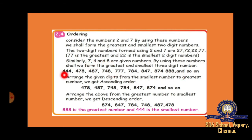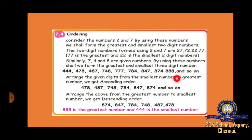For example, with digits 7, 4, and 8, you combine them to form all possible three digit numbers — such as 478, 487, 748, 784, 847, 874 — and then identify the smallest number and the largest number. Like this you have to write.